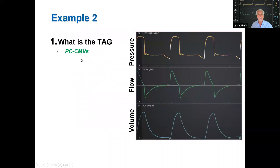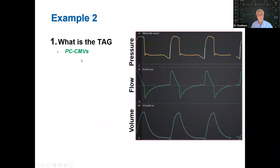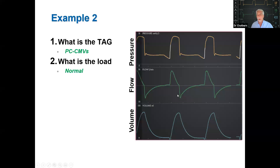Here's another example. The tag is again pressure control from the pressure, volume, and flow waveforms. The load appears normal — the expiratory time constant looks normal with a nice high peak expiratory flow and reasonable decay over a couple of seconds, no indication of high resistance or elastance.